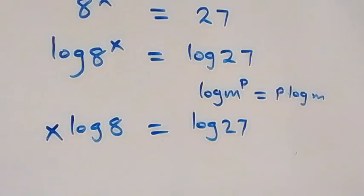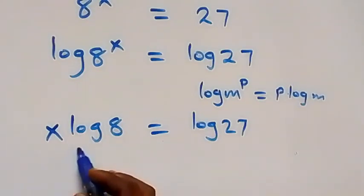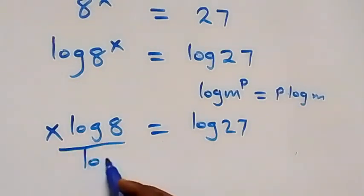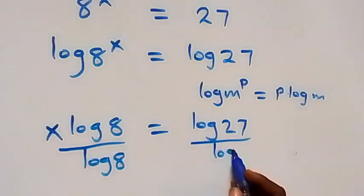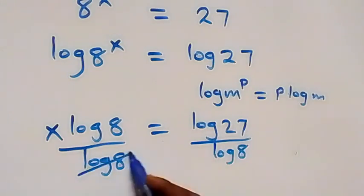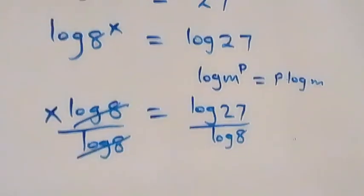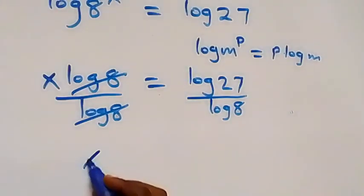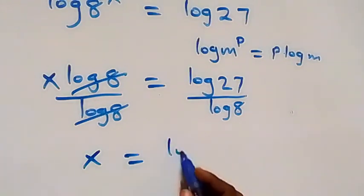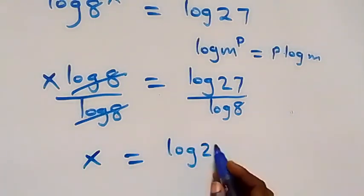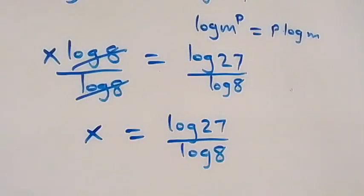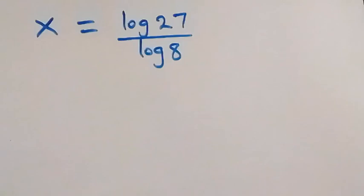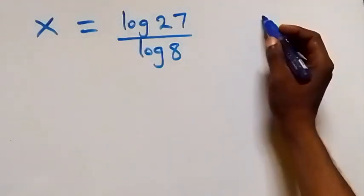The next step: we divide both sides by log 8. Log 8 cancels on the left, and we have x equals log 27 over log 8. From here we can simplify this further.